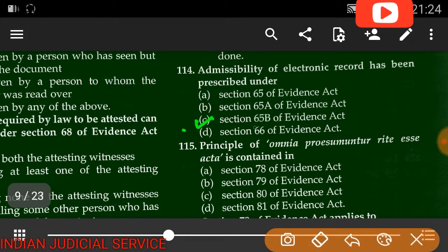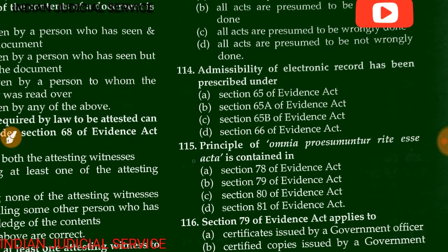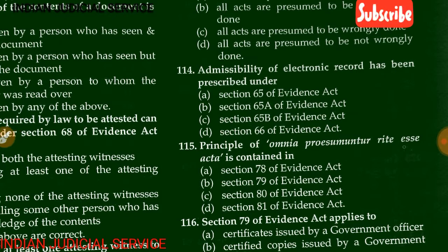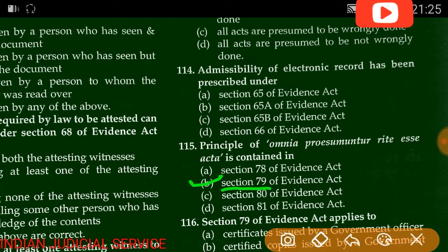Question number 114: Admissibility of electronic record has been prescribed under which section? The answer is option C — Section 65B of the Indian Evidence Act. Question number 115: The principle of 'omnia praesumuntur rite esse acta' is contained in Section 79 of the Evidence Act.